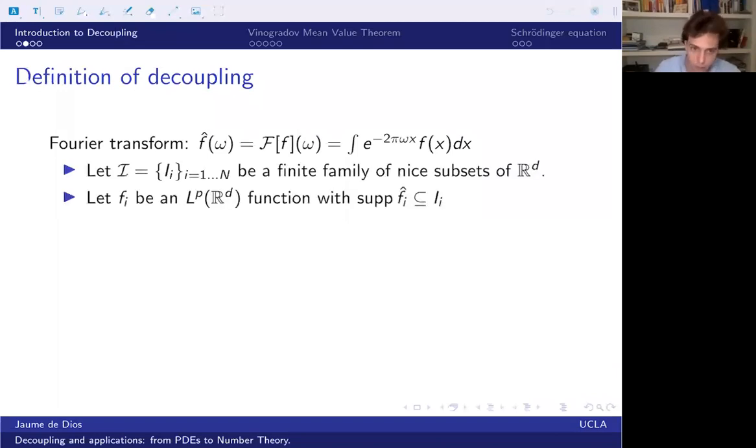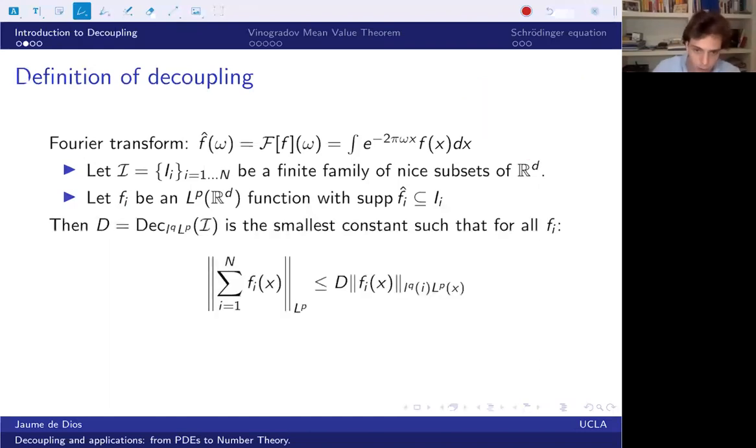So let's go into what does this decoupling estimate say. We start with a Fourier transform because that's the object we want to study. We want to look at functions with different frequencies and the way to understand the frequency composition of a function is by looking at its Fourier transform. So we're going to look at the function f, which is going to be the sum of a lot of little functions fi. And our condition will be that each of the fi's will be supported in a certain nice set of R^d. So we'll have R^d and then we'll have f1 maybe supported here, then f2 might be supported here. And then we want to know like how much constructive interference there is between those functions.